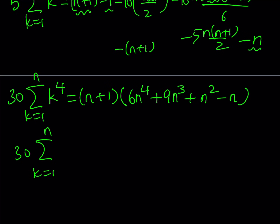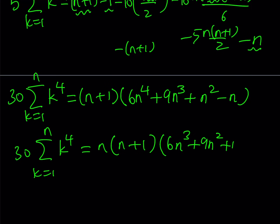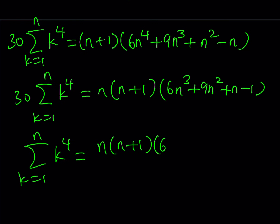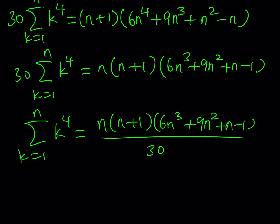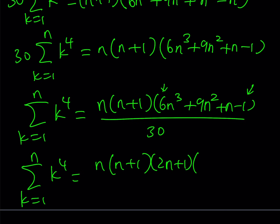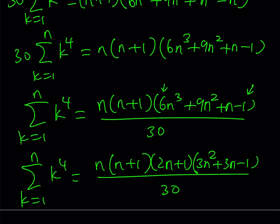Notice that n is also a common factor, so we pull out n times (n+1), leaving 6n³ + 9n² + n minus 1. Dividing both sides by 30 gives us the final expression: the sum of fourth powers equals n(n+1)(6n³+9n²+n−1) divided by 30. Using the rational root theorem, we find that negative one-half is a root, so we can factor out (2n+1), giving the fully factored closed form.